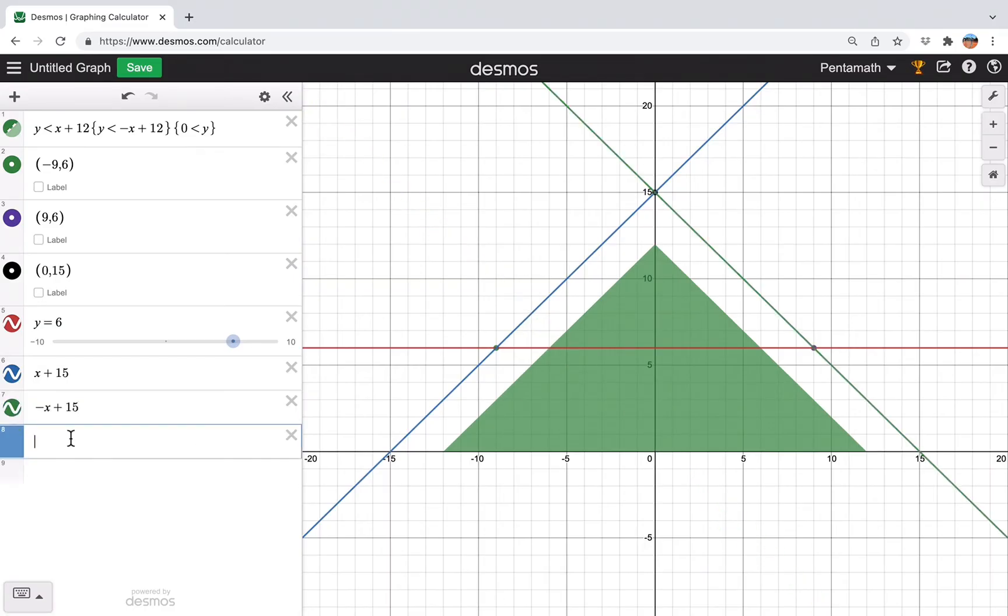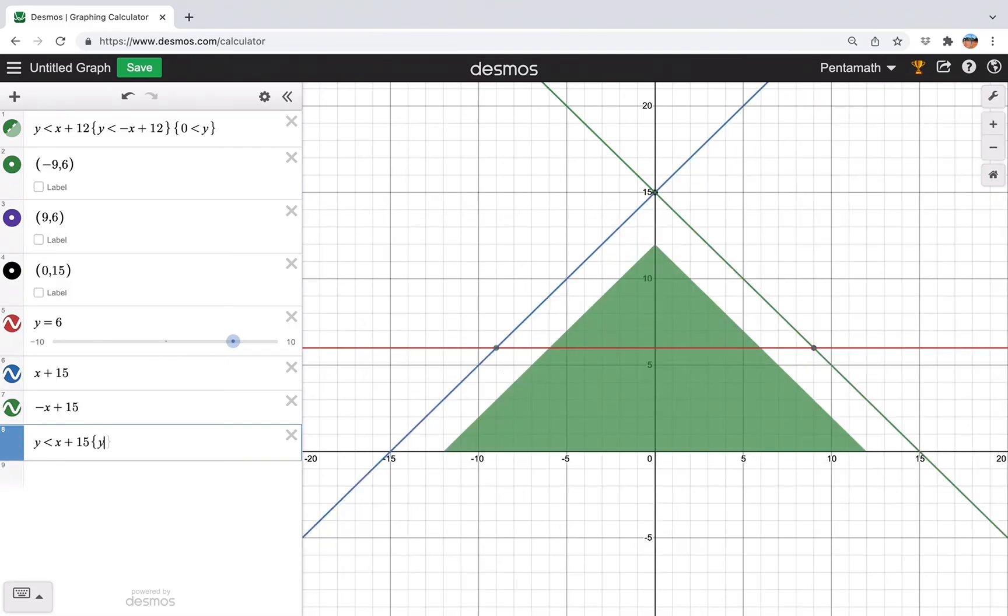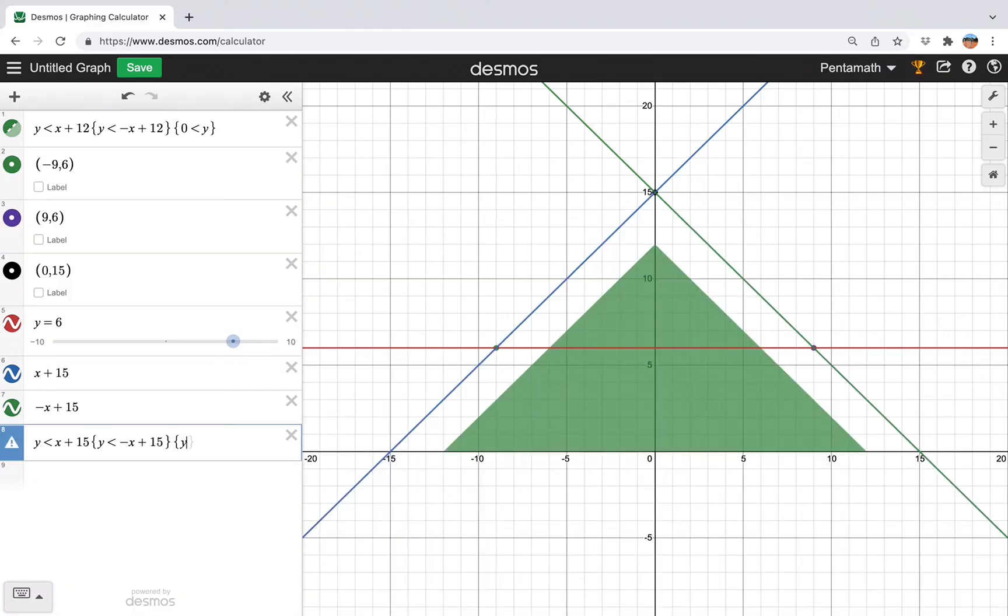And then again, we just need to put these in an inequality. So y is less than x plus 15, that's our first one. Then we also have y is less than negative x plus 15. And then we also have 6 is less than y. And we've got our second triangle there.